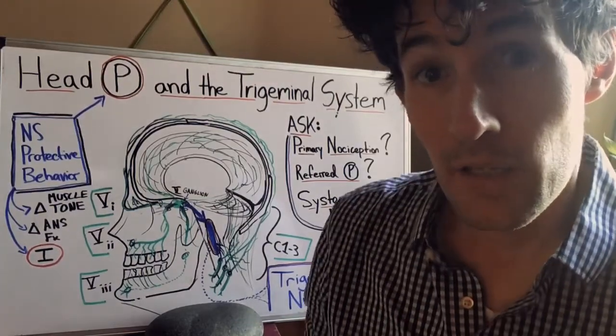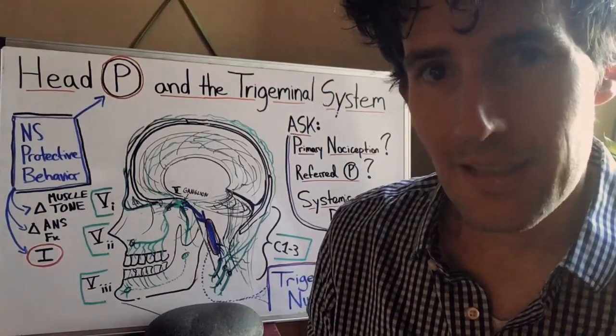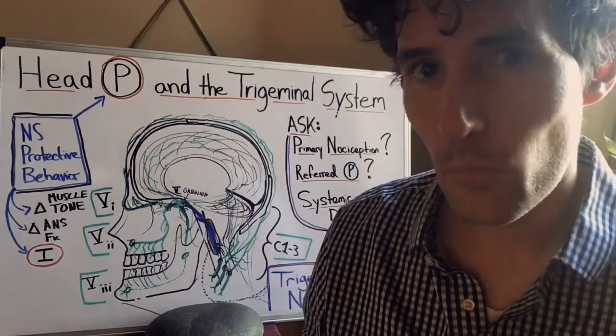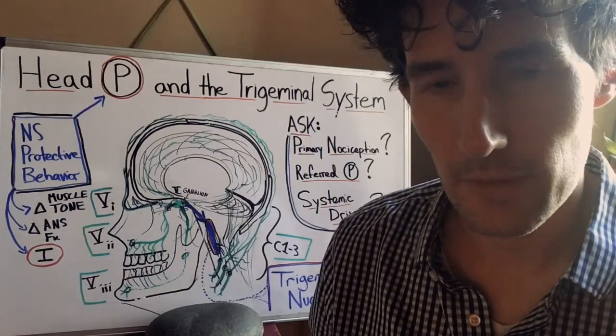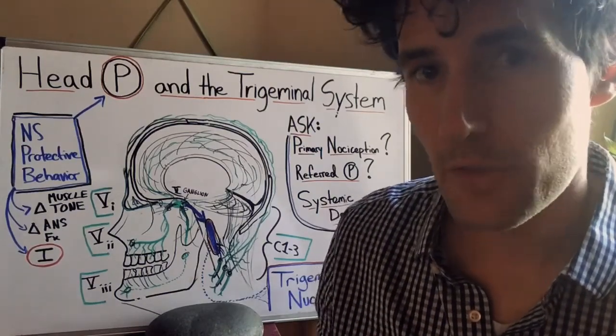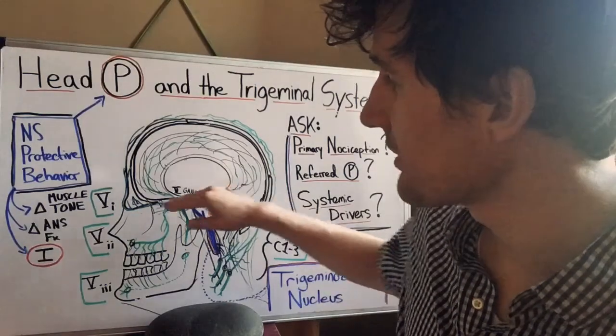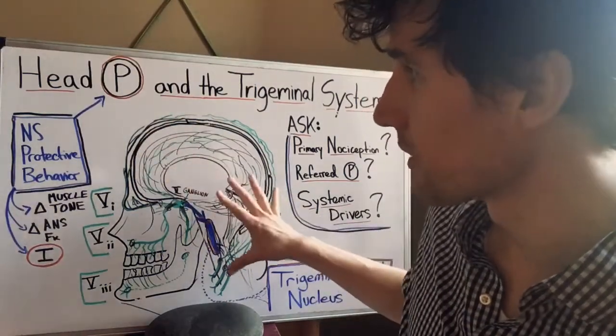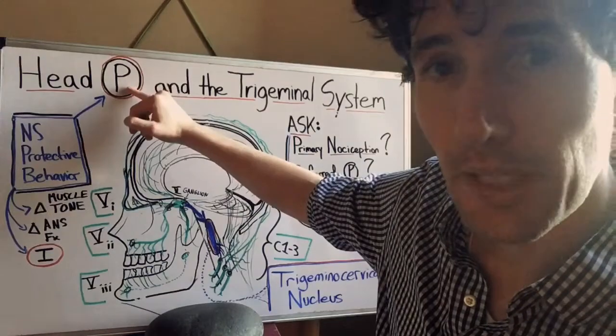It's the first place where the central nervous system can take in data around what kind of threat it might be perceiving and it can drive changes to the sensitivity of this system. It can drive the experience of pain,